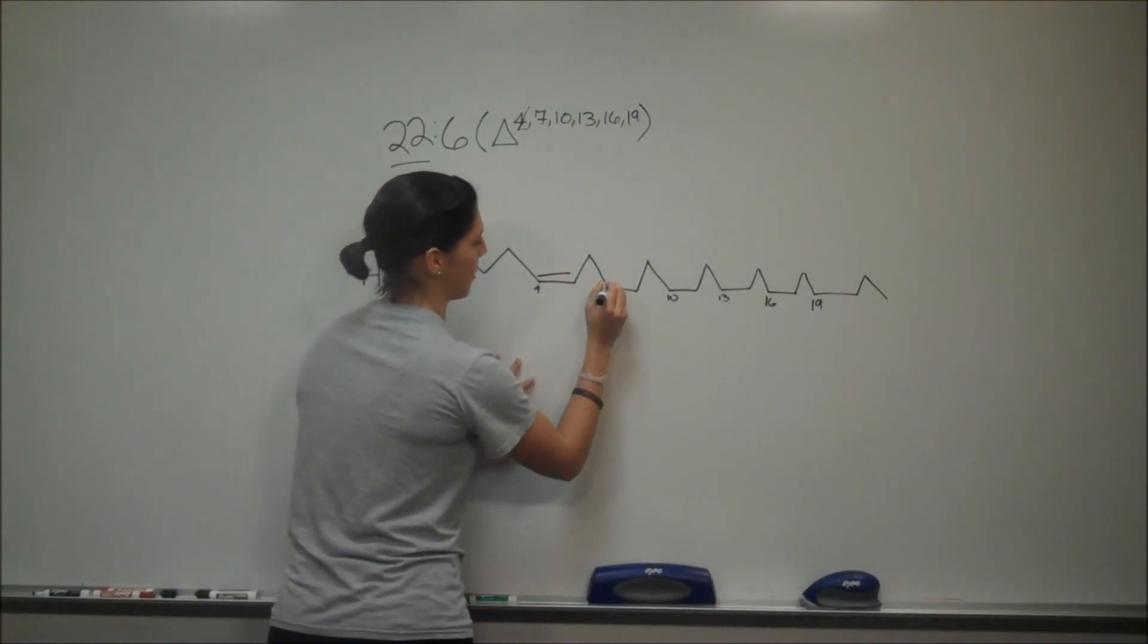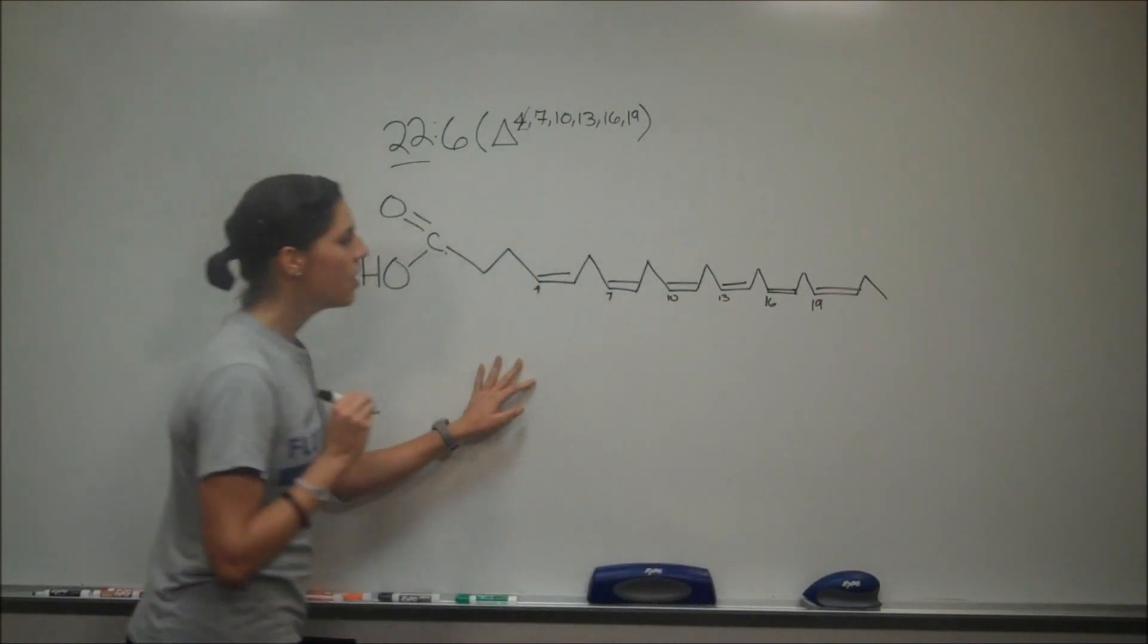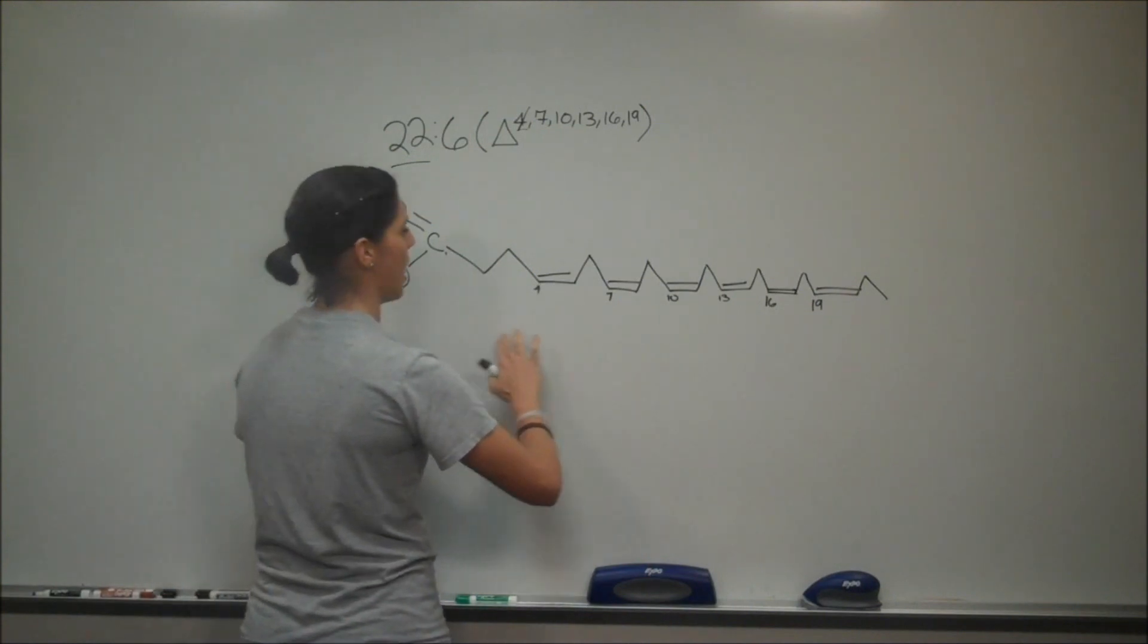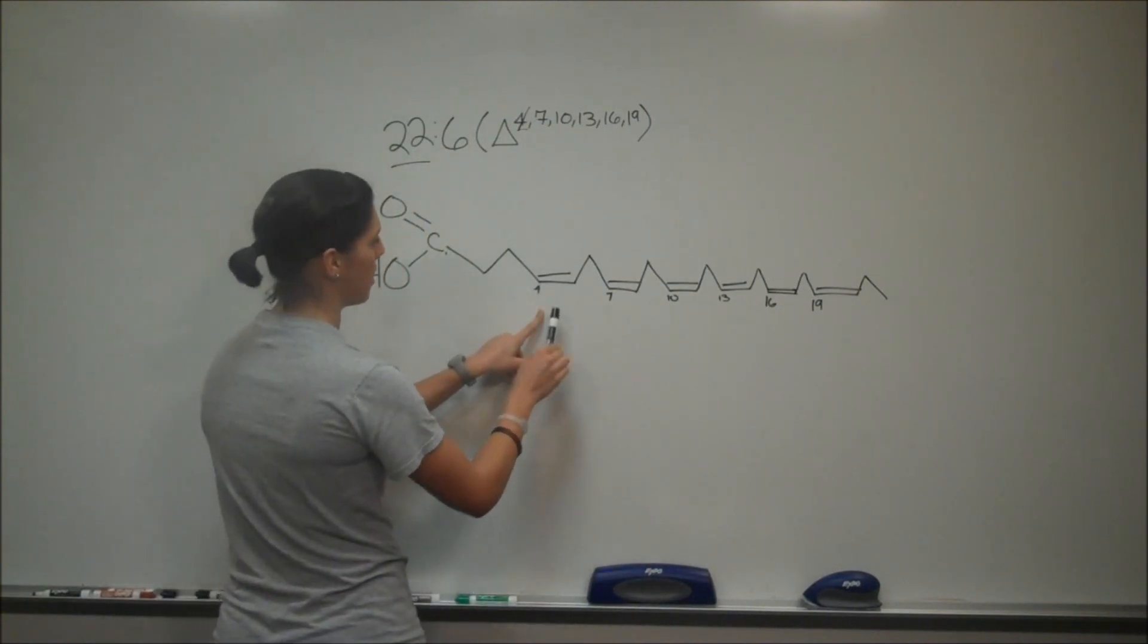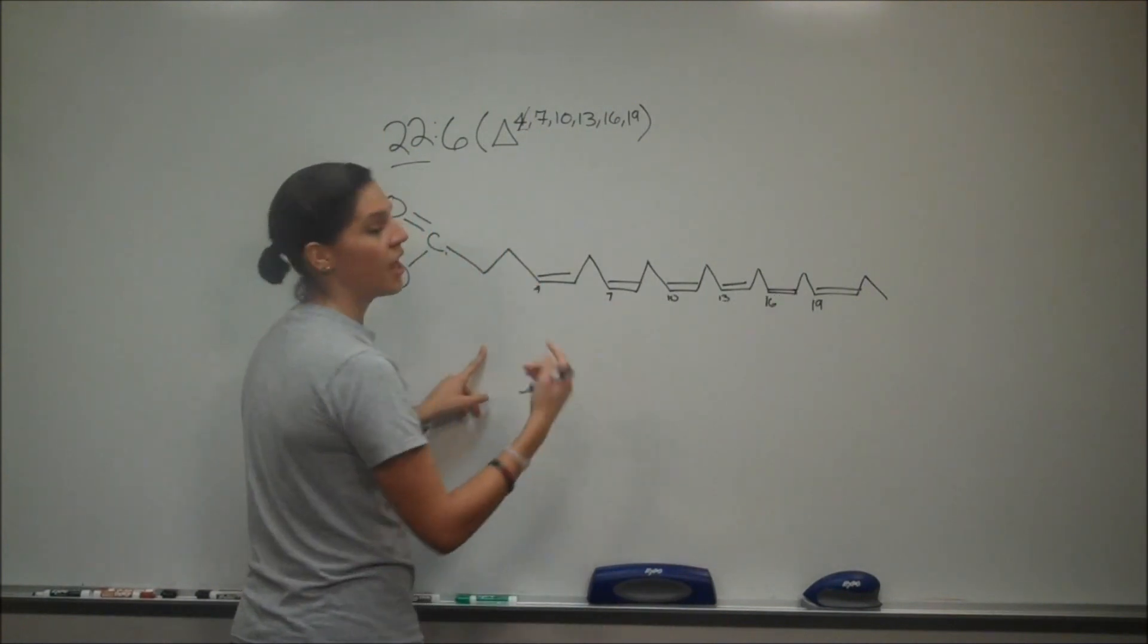And don't forget to actually put in the double bonds. So that's how you would approach this problem. As you can see, it has the carboxylic acid group and the hydrocarbon chain. It has six double bonds. We can double check: one, two, three, four, five, six. And if you count all the carbons, it will add up to 22.